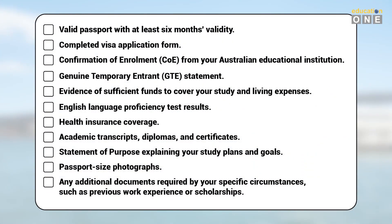First, a valid passport with at least six months validity. Second, a completed visa application form. Then, a Confirmation of Enrollment or COE from your Australian educational institution. Next, a Genuine Temporary Entrant statement. Then, evidence of sufficient funds to cover your study and living expenses. Next, English language proficiency test results. Then, health insurance coverage. And academic transcripts, diplomas and certificates. Next, a statement of purpose explaining your study plans and goals. Then, passport-size photographs. And finally, any additional documents required by your specific circumstances, such as previous work experience or scholarships.